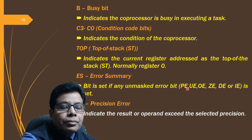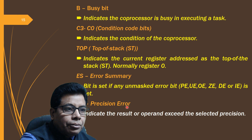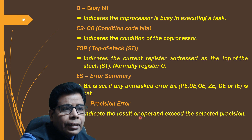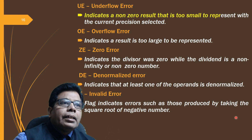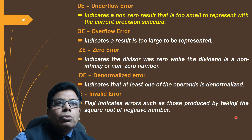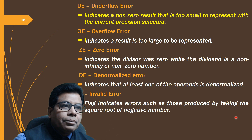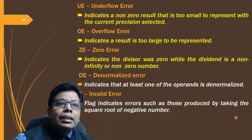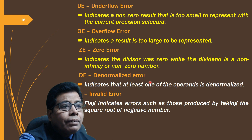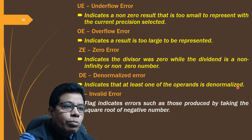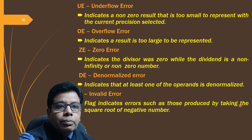P (precision error) indicates the result or operand is not within the selected precision. UE (underflow error) indicates a nonzero result too small to represent at the current precision. OE (overflow error) indicates the result is too large to be represented. ZE (zero divide error) indicates the divisor was zero while the dividend is non-infinity or nonzero. DE (denormalize error) indicates at least one operand is denormalized. IE (invalid error) indicates an invalid operation, such as taking the square root of a negative number.